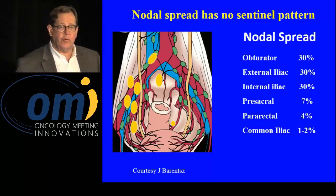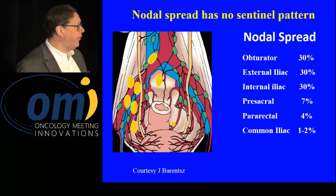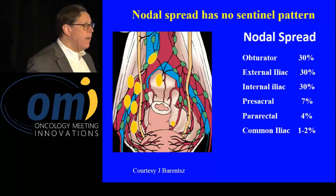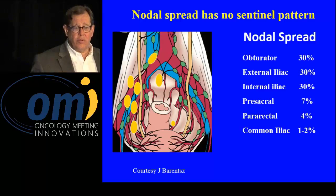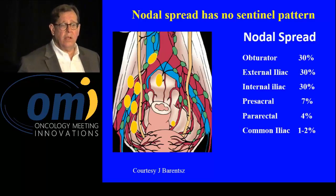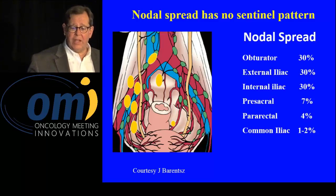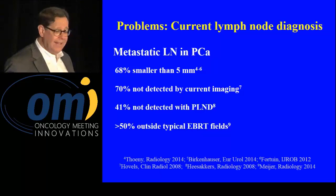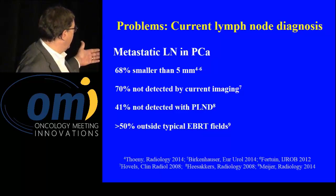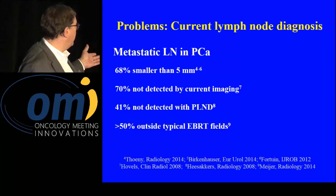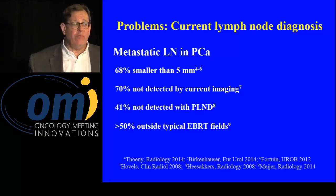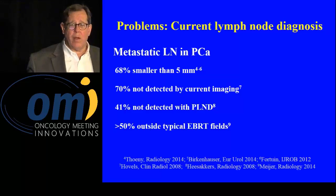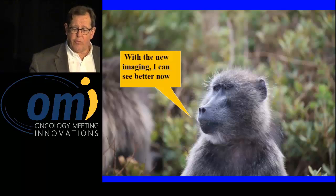Nodal spread doesn't have a sentinel pattern, and as mentioned in the surgical talk with Dr. Linahan, even the extended lymph node dissection is only catching about two-thirds of nodes — so there might be a survival advantage for extended over limited dissection, but we're still missing a fair amount. The problem is you just can't see these nodes. 68% are smaller than five millimeters, 70% are not detected with current imaging, 41% in this particular study were not detected by pelvic lymph node dissection, and more than 50% in the pelvis are actually outside typical external beam radiation fields.